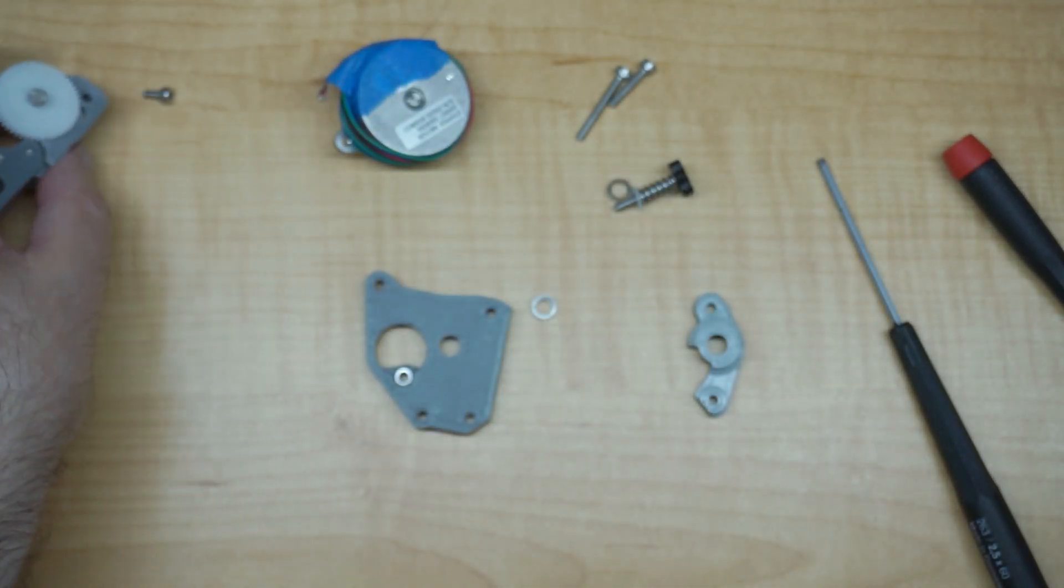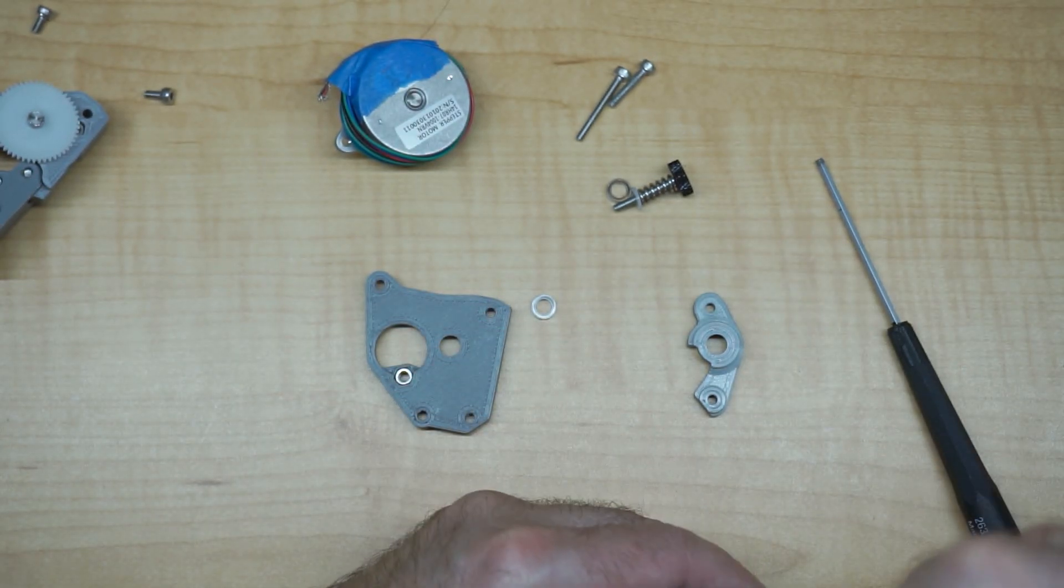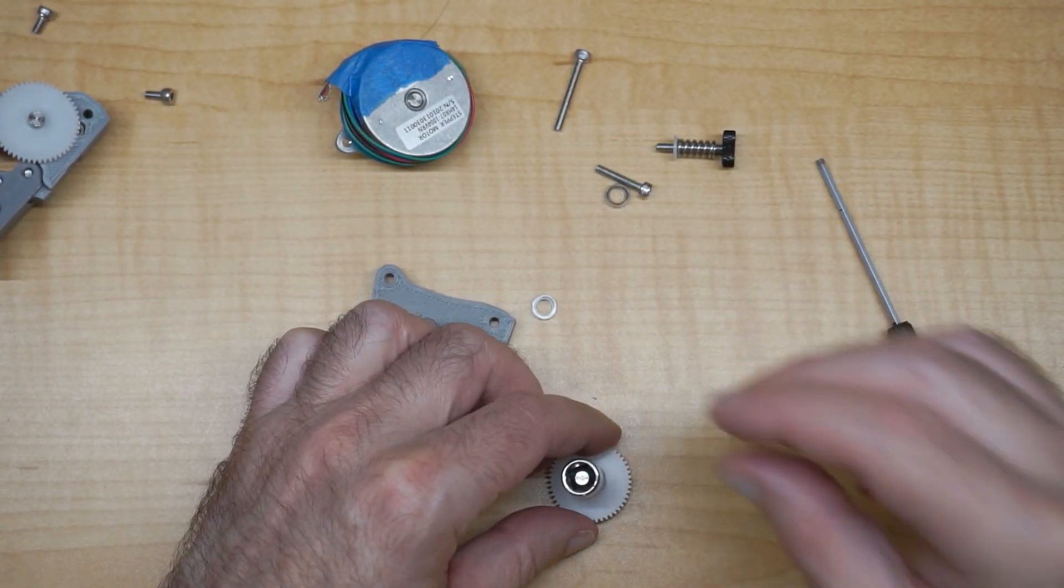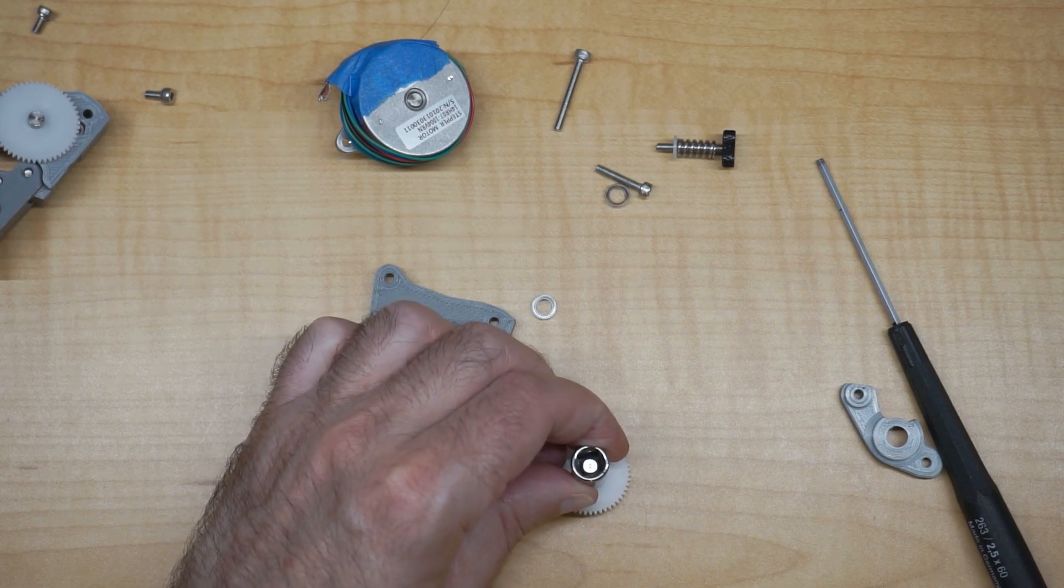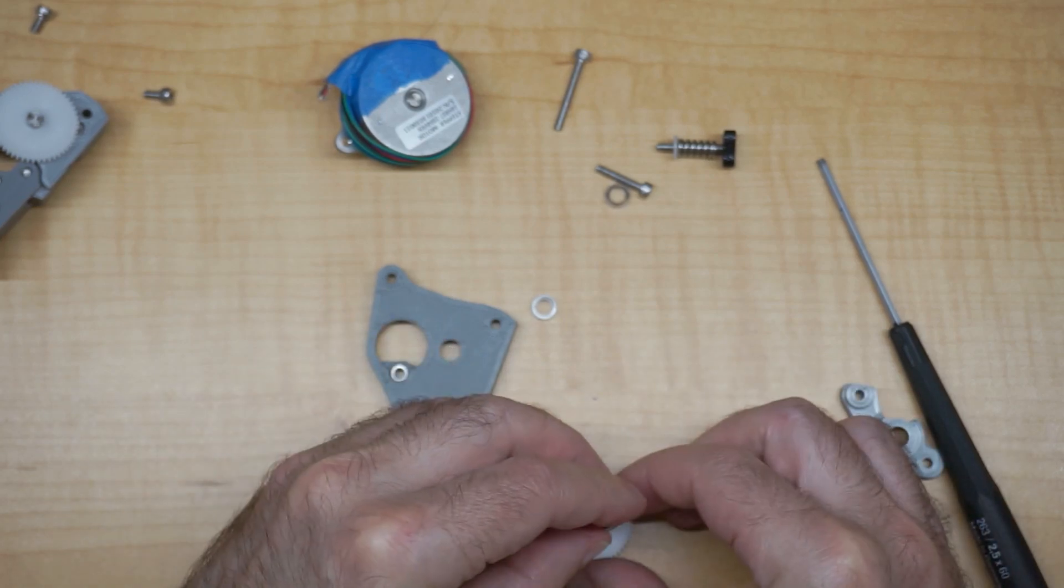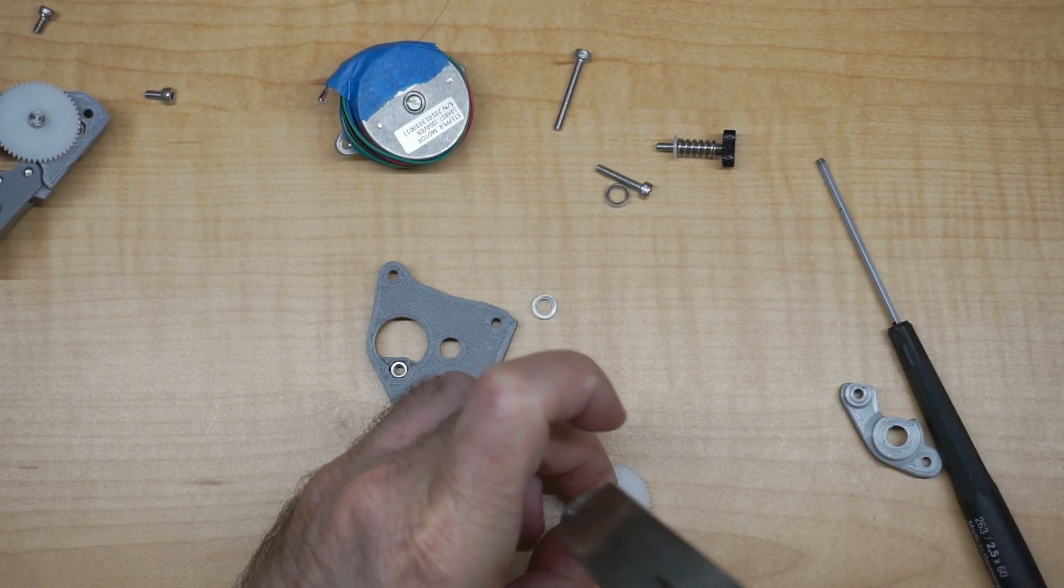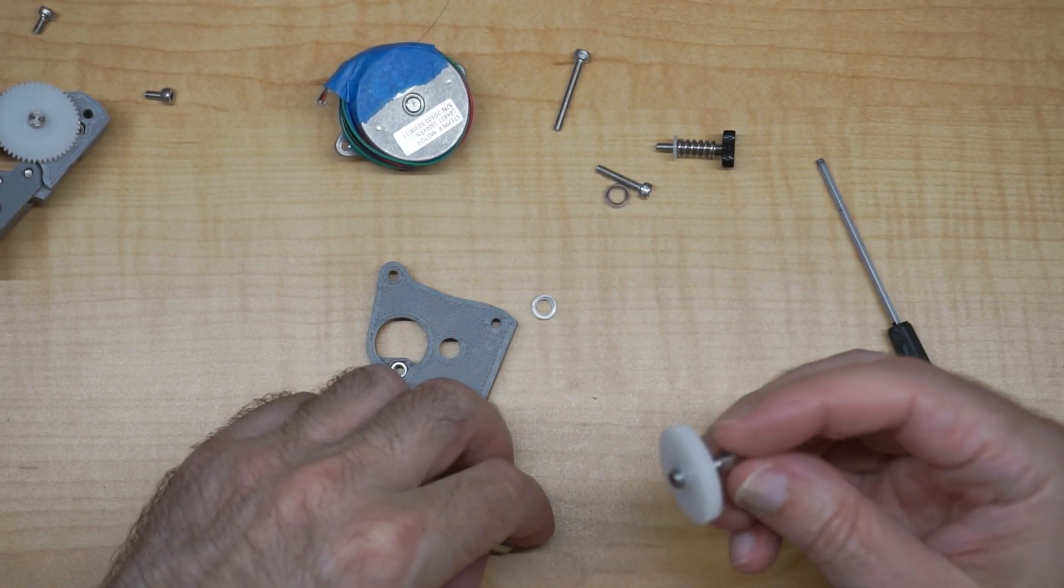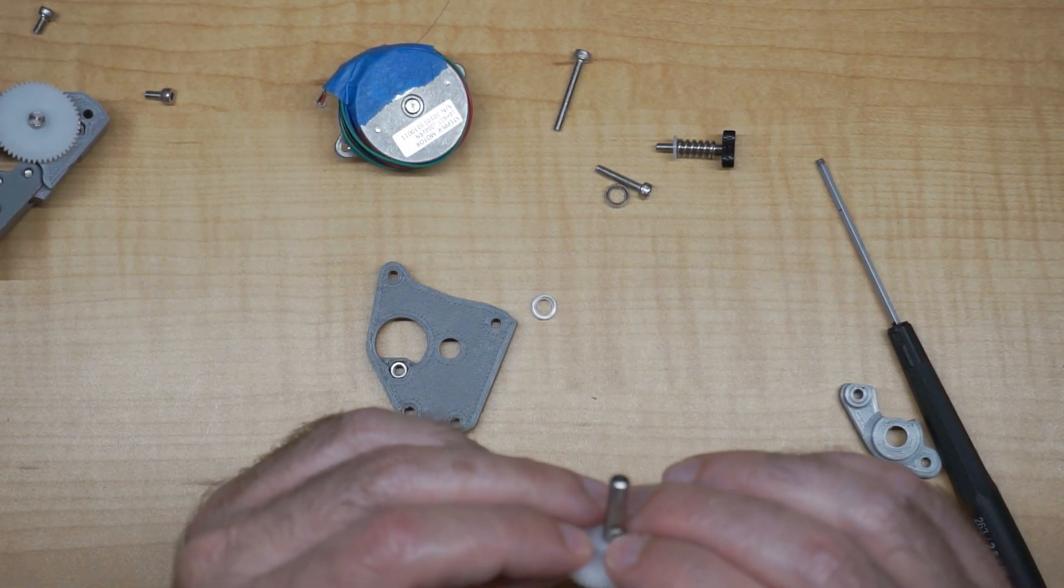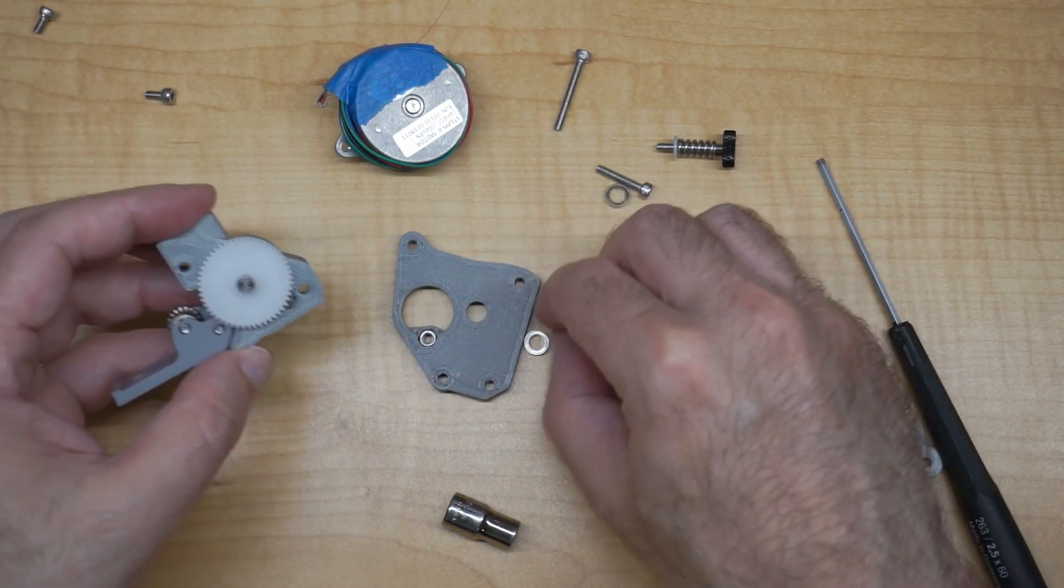If it sticks out, what I found is I can basically take a small socket, kind of just rest it on that and press on the gear. See how it's flush there? You don't need a lot of force - just with a small hammer, just a couple of times, and it's going to move the gear a little further down on the shaft just enough so that when you do assemble it, you have proper alignment.